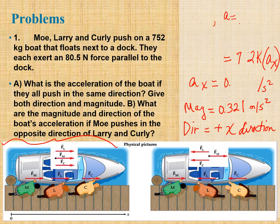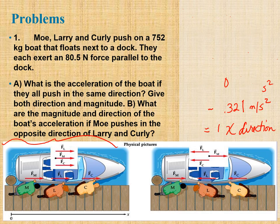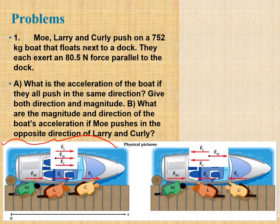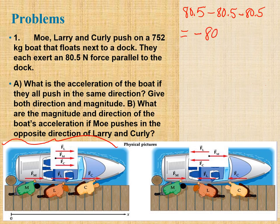For part b, what are the magnitude and direction of the boat's acceleration if Moe pushes in the opposite direction of Larry and Curly? Looking at the image, Moe is pushing rightward while Larry and Curly are pushing leftward. So Moe's 80.5 newtons is positive, but Larry and Curly's forces are negative.